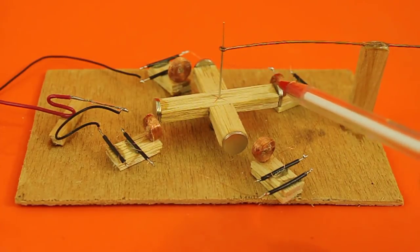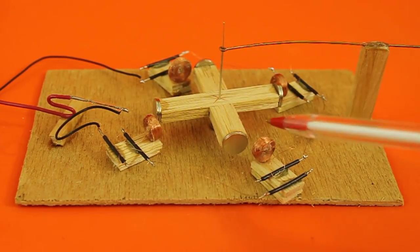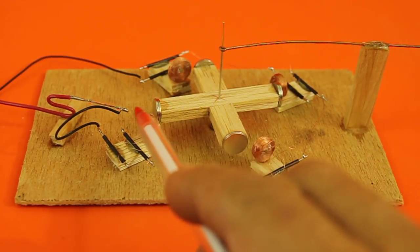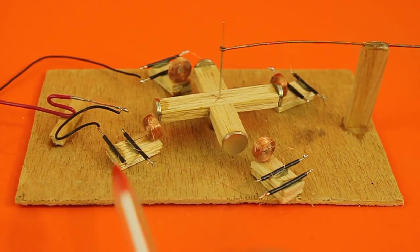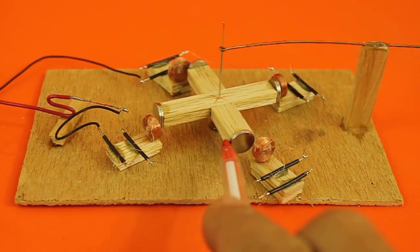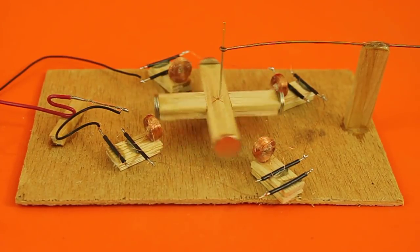It has four neodymium magnets and also four coils and a magnetic switch. The magnetic switch closes every time a magnet passes near the switch and that energizes the coils that attract the magnets and that makes the rotor turn.